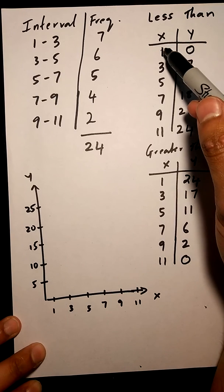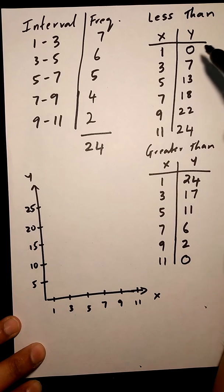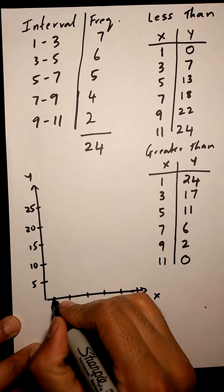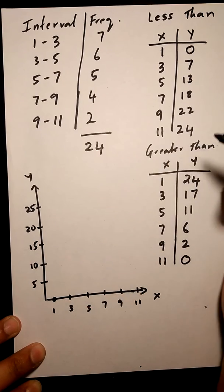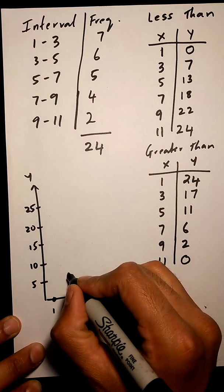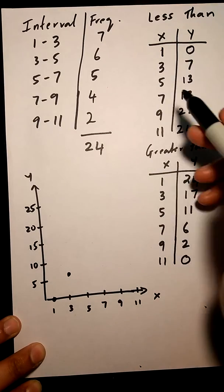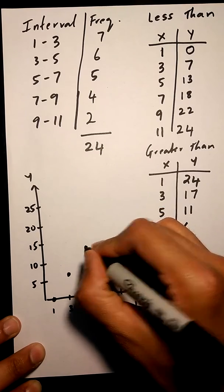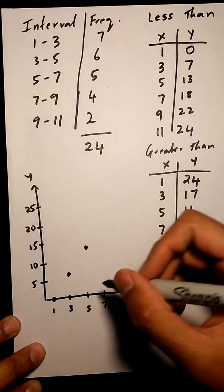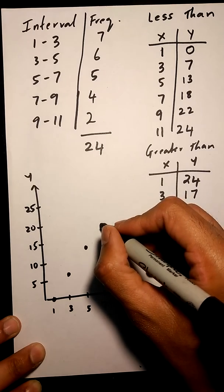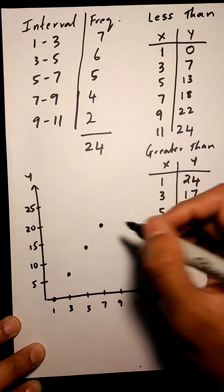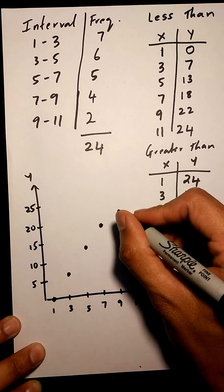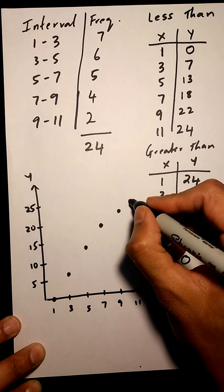So my first point, my x value is 1, my y value is 0. So 1, 0 is down here. 2nd point is 3 and 7. 3rd point is 5 and 13. 7 and 18. 9 and 22. And 11 and 24.